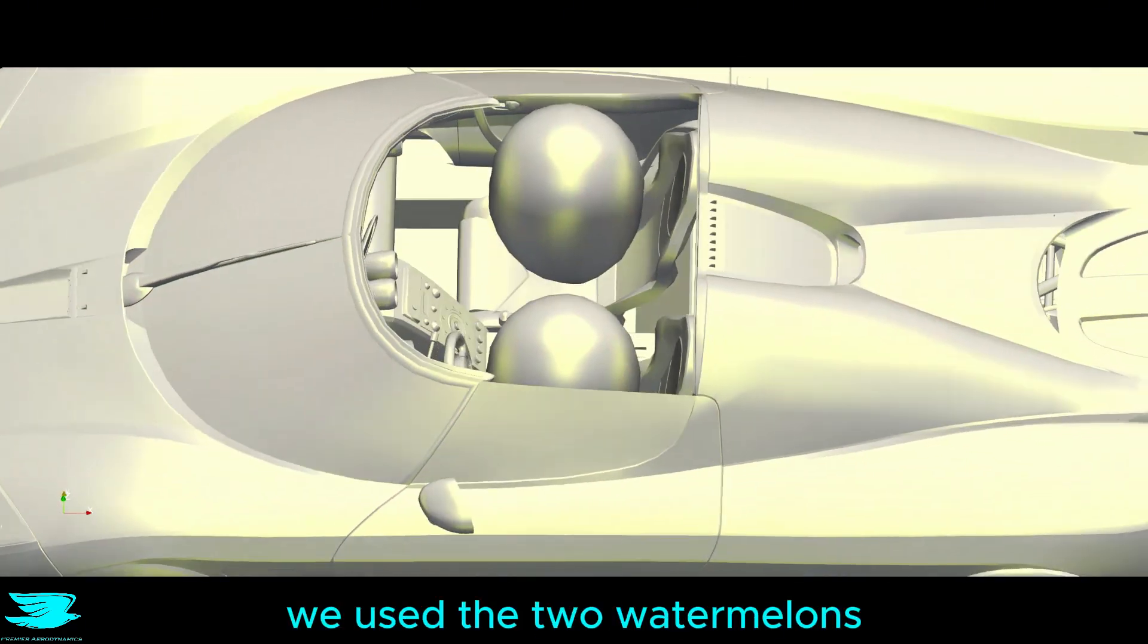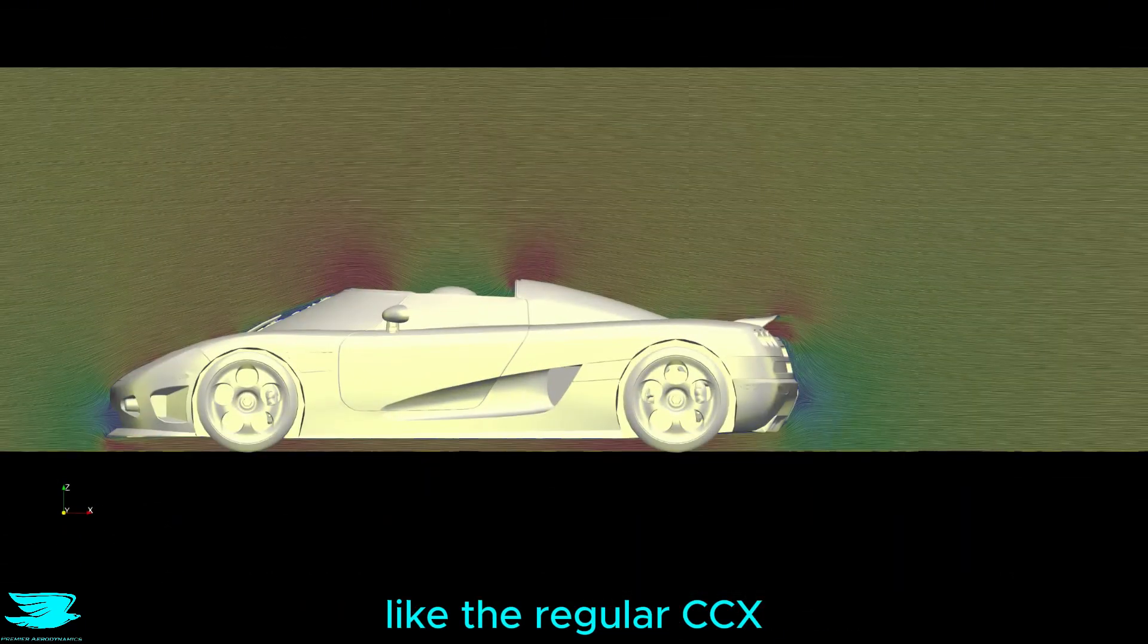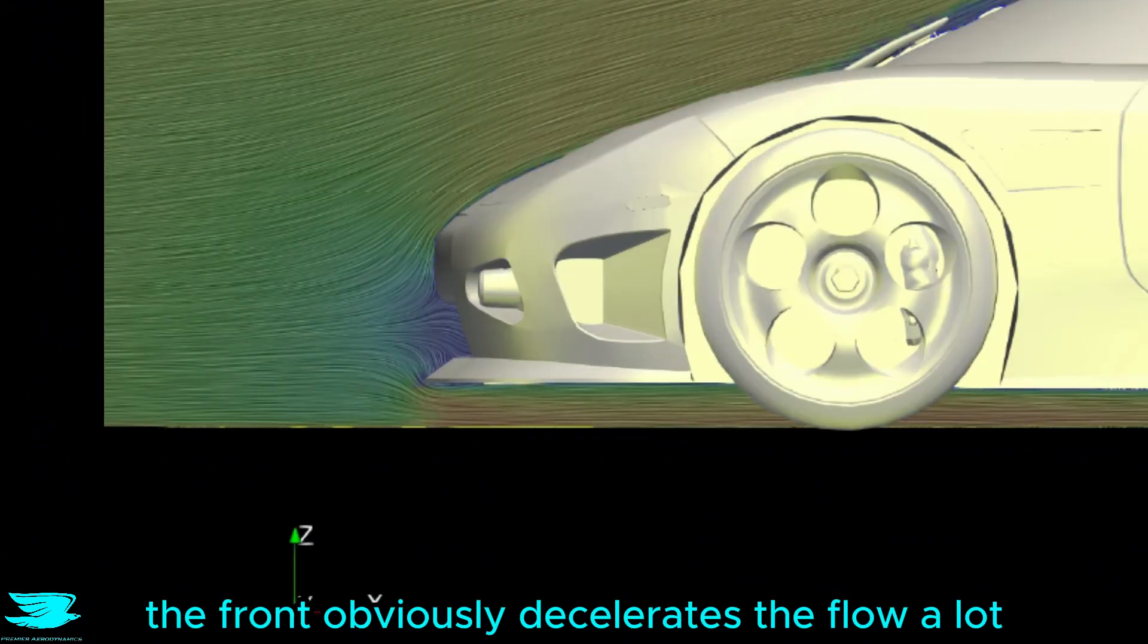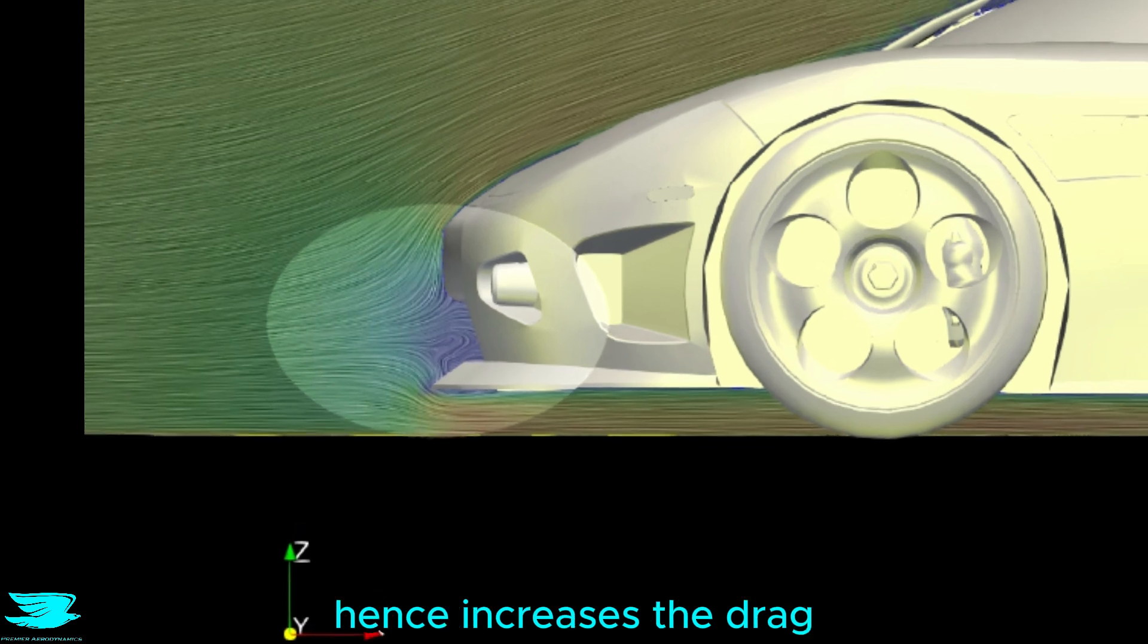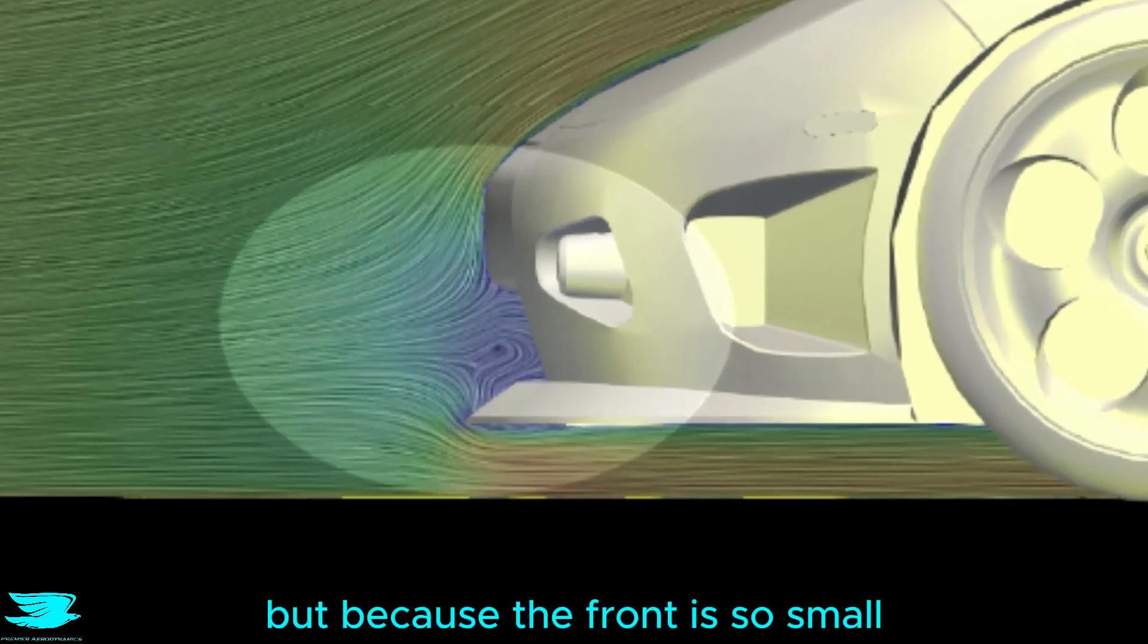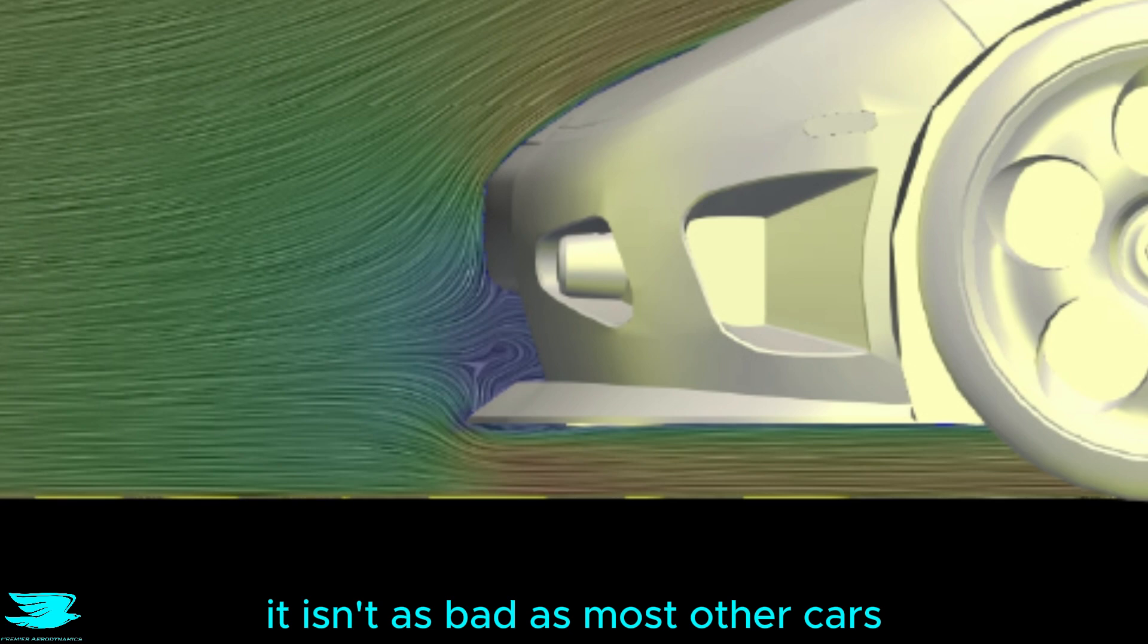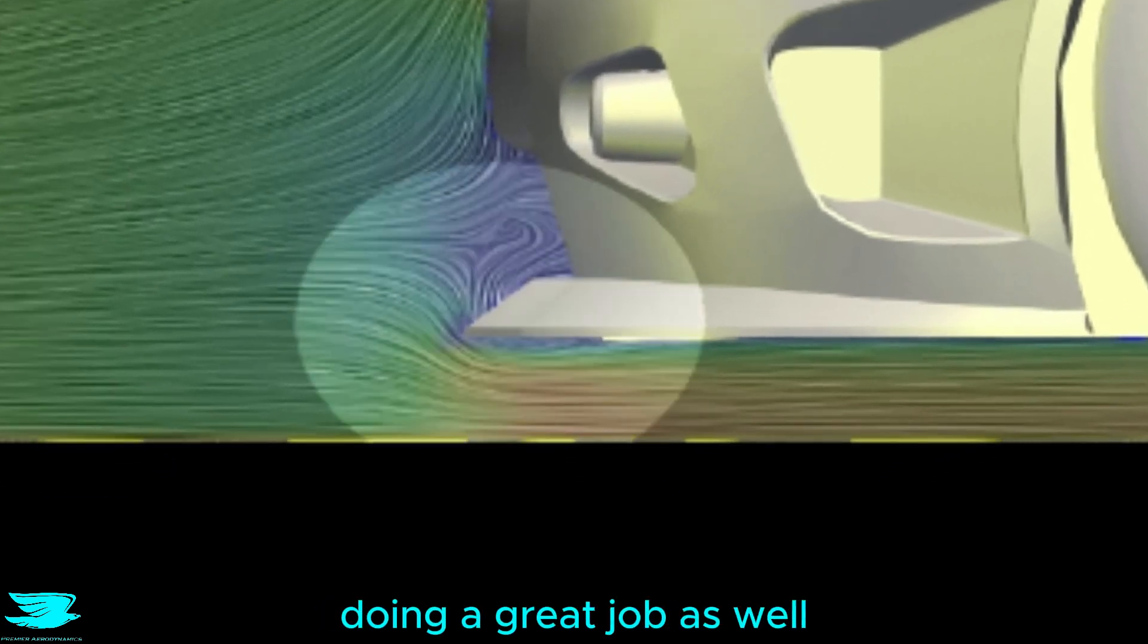For the passengers we used two watermelons. Like the regular CCX, the front obviously decelerates the flow a lot, which converts much of the air's dynamic pressure into static pressure and hence increases the drag. But because the front is so small, it isn't as bad as most other cars. The front little splitter is still doing a great job as well.